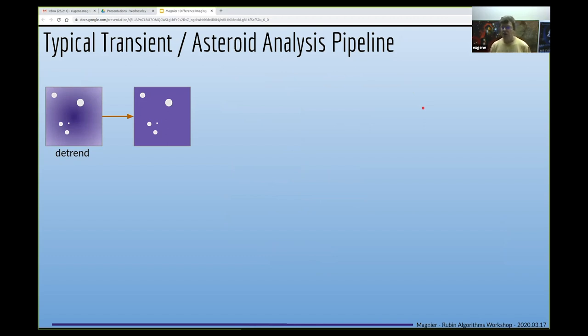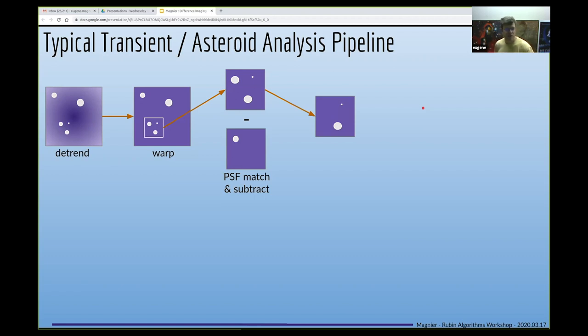We start off with a raw image and do some detrending to remove the instrumental signature like Robert talked about yesterday. Then we can zoom in on some patch of that image and pull out some set of pixels. We typically warp the raw pixel system to some consistent grid on the sky and then we can select some reference image that matches that grid and subtract that image from the science image.